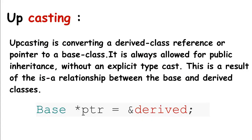In the case of upcasting, we convert the derived class reference or pointer to the base class. It is always allowed in the case of public inheritance without any explicit cast. This is because of the 'is-a' relationship between the base and derived class, since the derived class can use the public interface of the base class. So assigning is pretty simple — we just assign the reference of the derived class to the pointer of the base class.